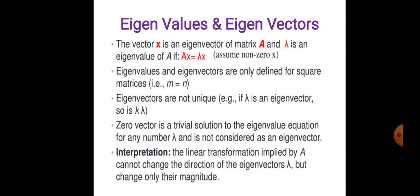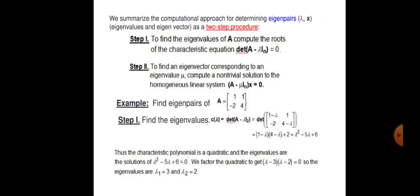To calculate eigenvalues and eigenvectors, follow these steps. Step one: find the eigenvalues of A by computing the roots of the characteristic equation, that is the determinant of (A minus lambda I) equals zero. Step two: to find an eigenvector corresponding to an eigenvalue mu, compute the non-trivial solutions to the homogeneous linear system (A minus mu I) times X equals zero.